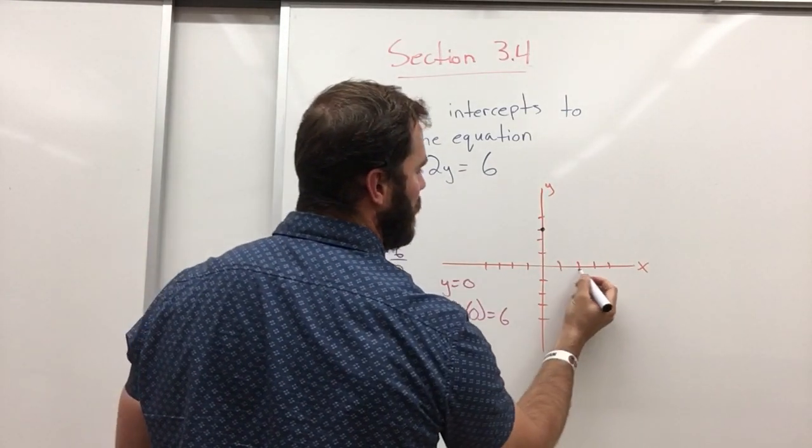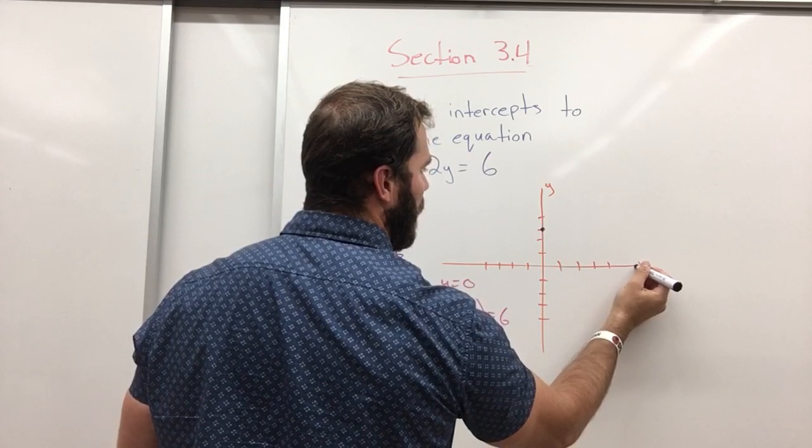x is six when y is zero. x is six, one, two, three, four, five, six, and y is zero.